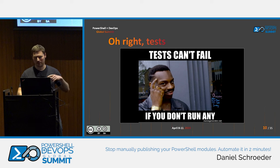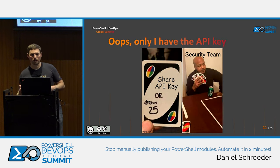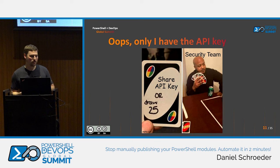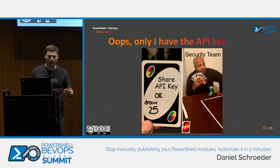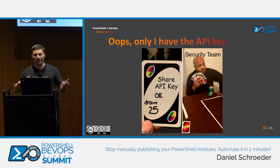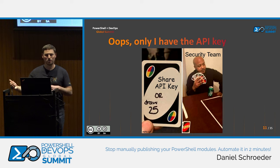OK, so you can remember: bump the version number, run the tests. Then a teammate wants to publish changes themselves and realizes they need the API key. Only you have it, so now you're sharing your API key among the team. Worst case, you're passing that secret around in plain text over email or Slack. Best case you've put it in Azure Key Vault or a password manager.